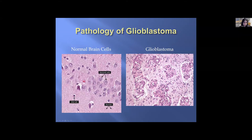A normal brain cell pathology slide looks organized and defined. Whereas a glioblastoma looks more chaotic on the slide, with more cell division and more cells present. This is a comparison between normal versus tumor pathology.